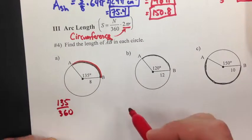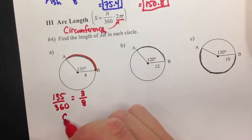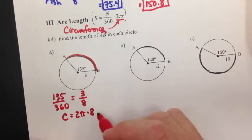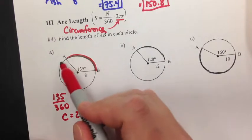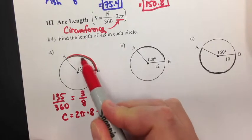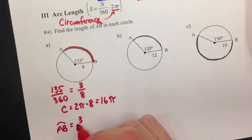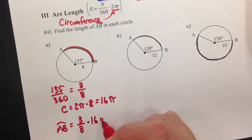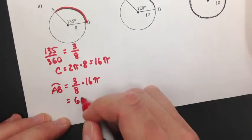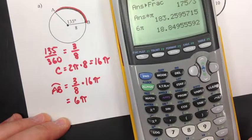For part a, the central angle is 135 degrees, so the fraction is 3/8. The total circumference is 2 pi times 8, which is 16 pi — that's the total distance around the circle. I only want 3/8 of that distance. So arc AB equals 3/8 times 16 pi. Three-eighths times 16 is 6, giving us 6 pi. As a decimal, 6 times pi is approximately 18.8.